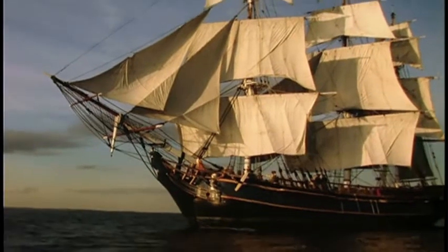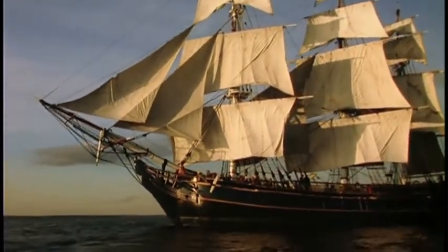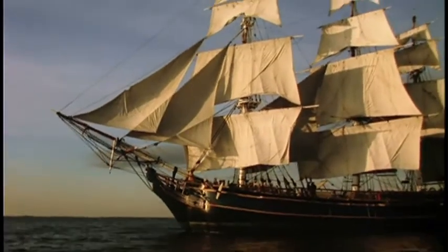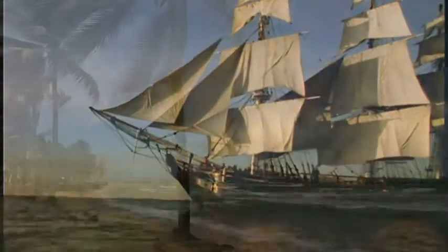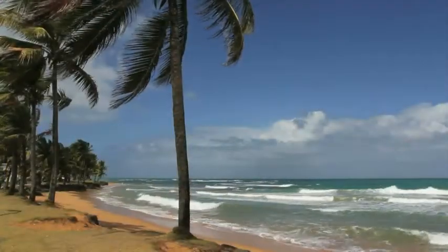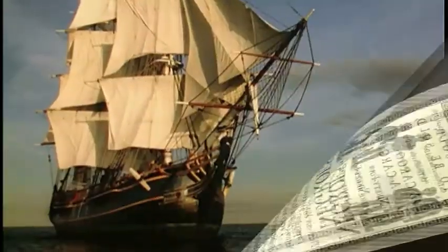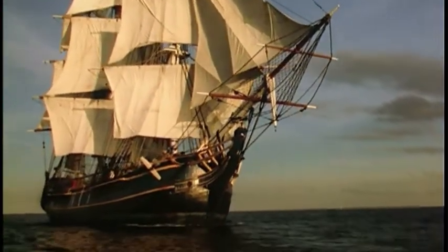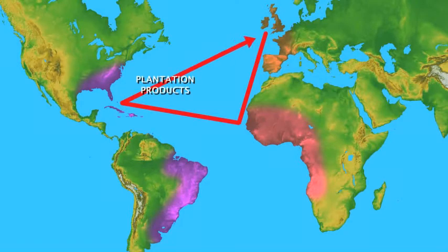It is estimated that, on average, about 12% of the captive people died during this voyage due to poor nutrition and highly overcrowded, very unsanitary conditions. Once the ship reached the Caribbean islands or the southern English colonies of North America, the captives were sold again at public slave auctions, typically being paid for with plantation products such as tobacco and sugar. After the enslaved people were sold, the plantation products were shipped to Europe, thus completing the third leg of this triangle trade route.